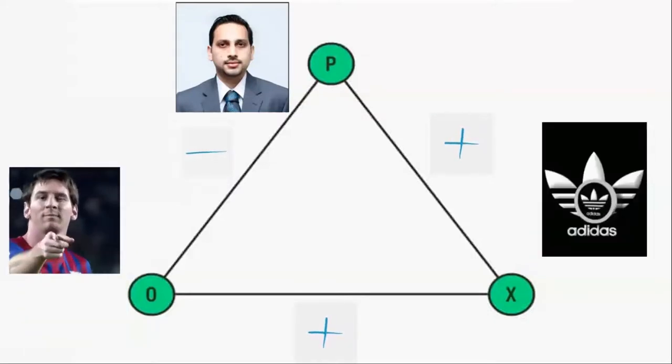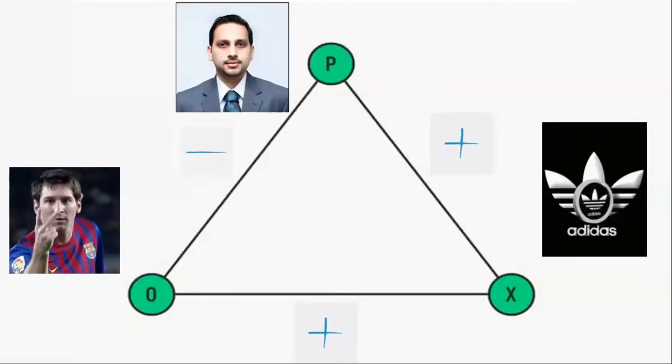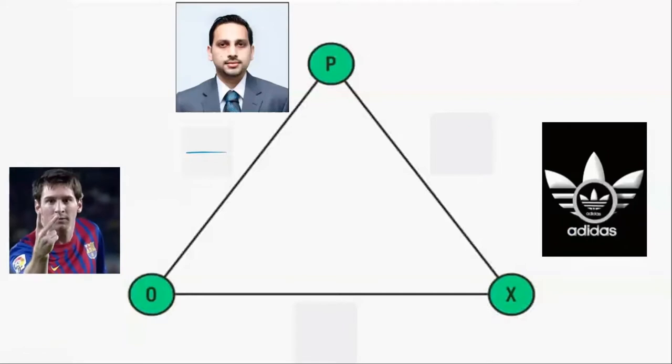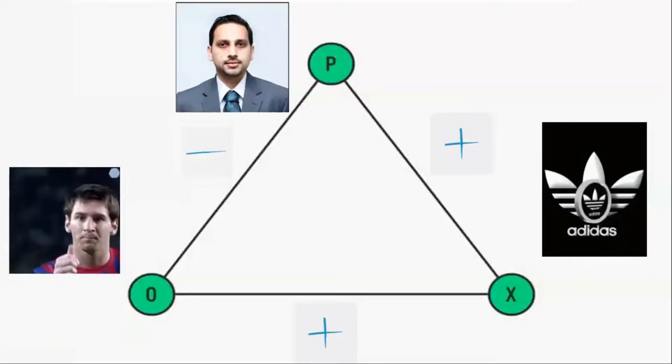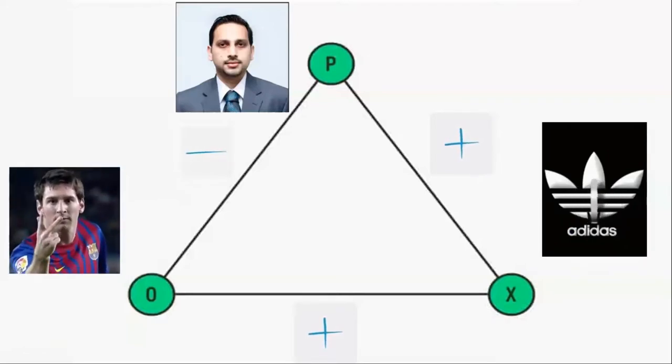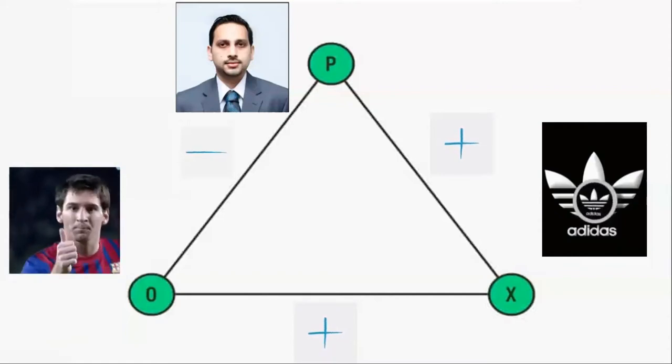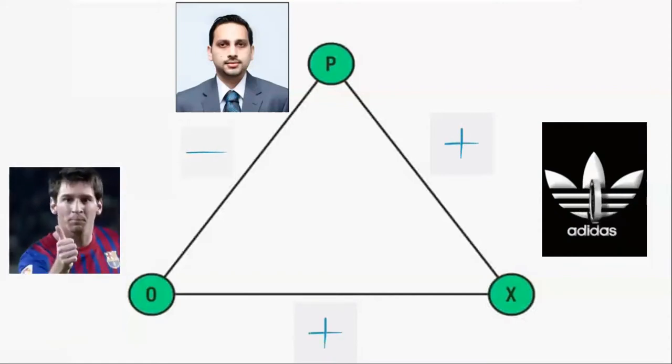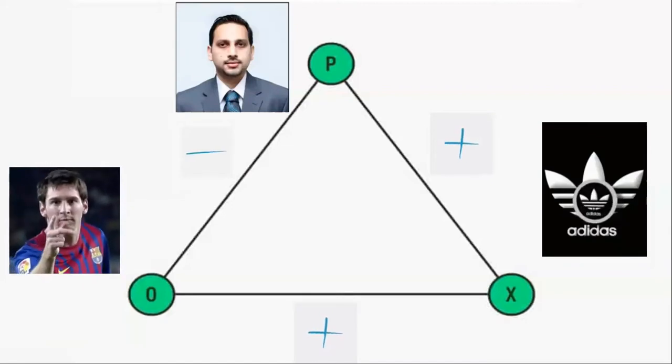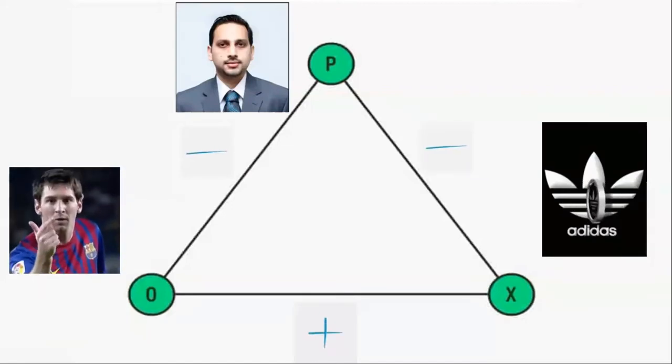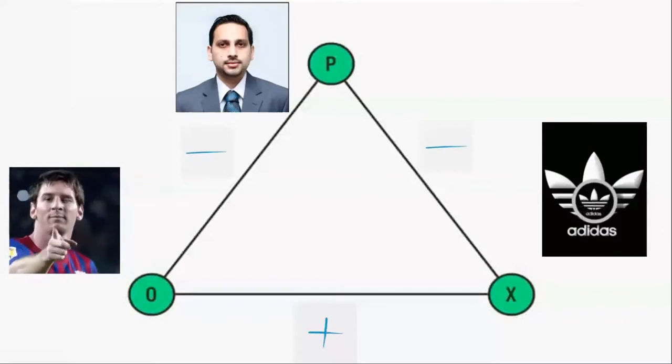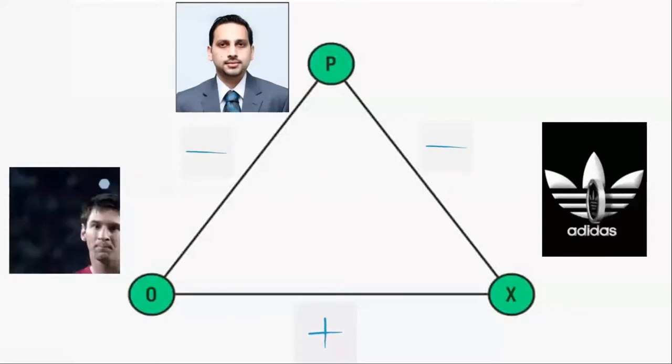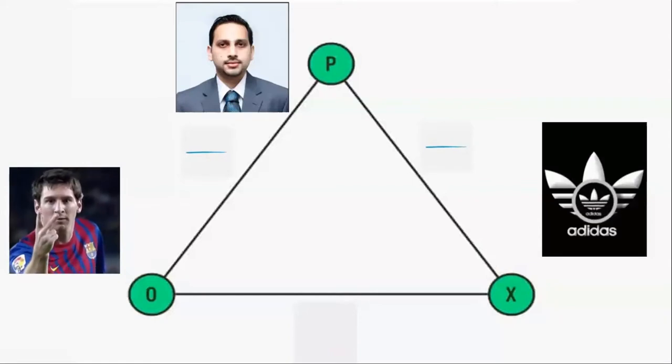Alternatively, if I do not like Messi and I like Adidas but Messi also likes Adidas, so this is also unbalanced. P minus O, P plus X, O plus X - two positives and one negative, so this is an unbalanced relationship. So having the same attitude as someone you dislike can also feel uncomfortable, so I may be more likely to change my attitude to make it dissimilar to that of Messi who I dislike.